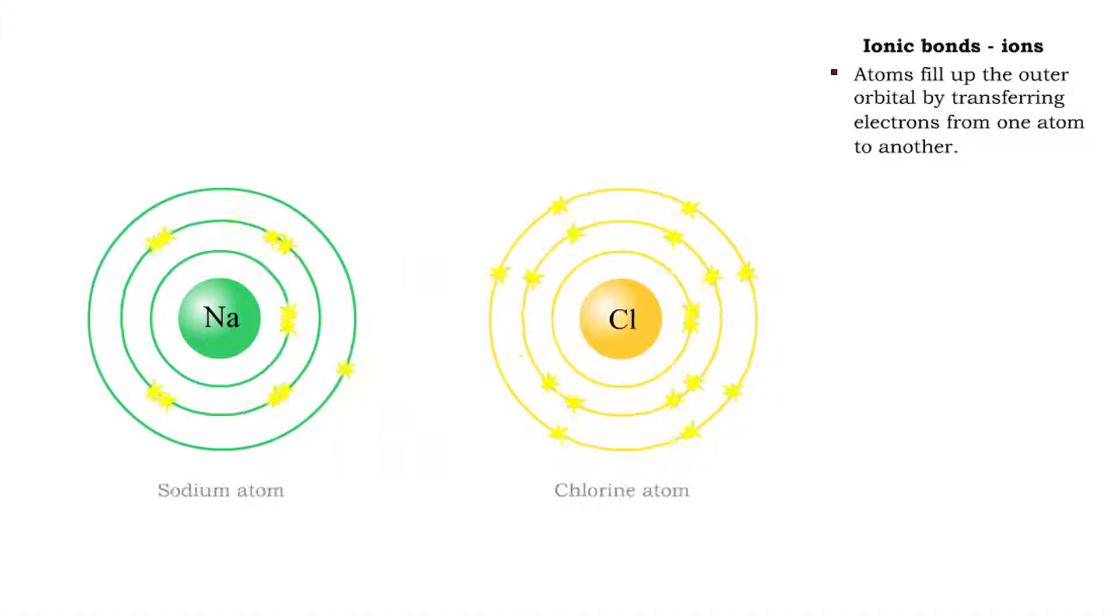Ionic bonds are formed when electrons are transferred from one atom to another. For example, one electron can move from the sodium atom to the chlorine atom.